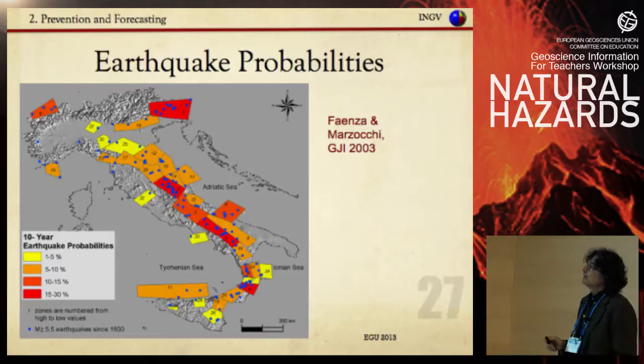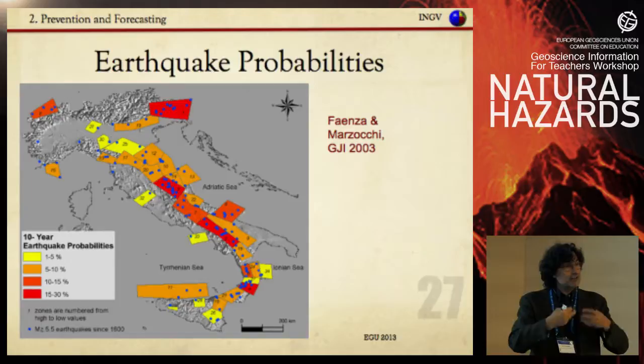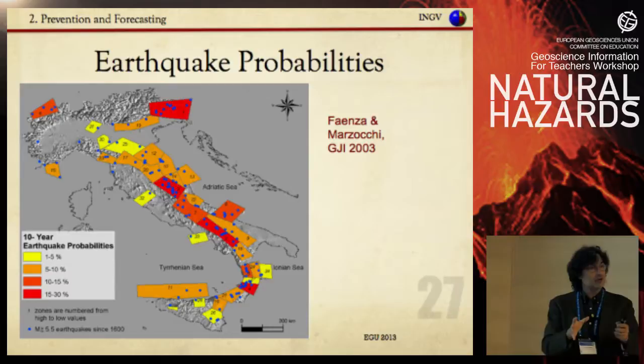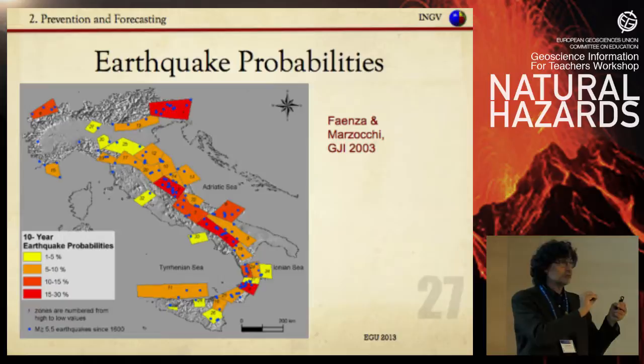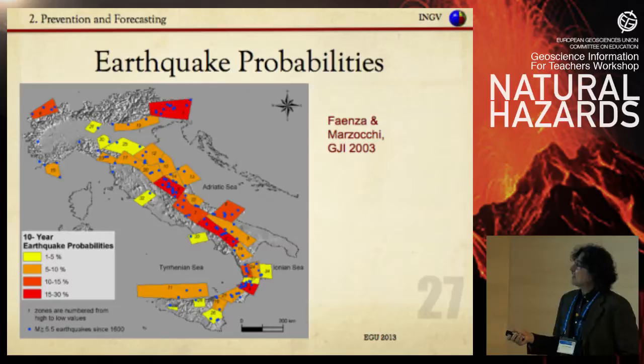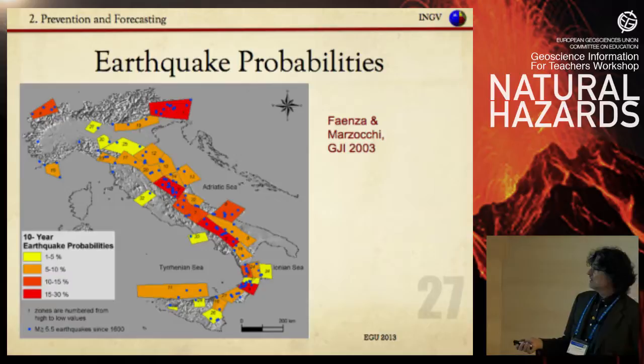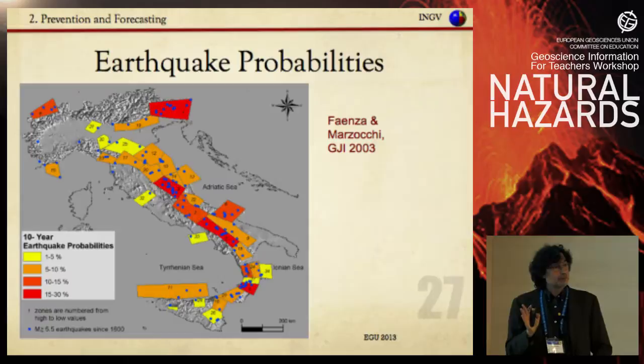We also try to understand how faults release energy in time and compute the probability of earthquake occurrence. The goal is to understand the rate of earthquake production and transform it into earthquake probability. This result, published in 2003, shows that in L'Aquila — many years before the L'Aquila earthquake — we knew there was a 15 to 30 percent probability of a magnitude larger than 5.5 in the next 10 to 30 years. We should not have been unprepared in L'Aquila.